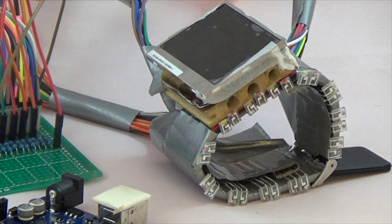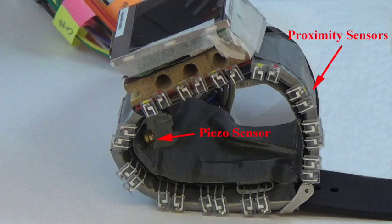We build our prototype smartwatch using a 2-inch display and a plastic watch strap augmented with 12 infrared proximity sensors and a piezo vibration sensor connected to an Arduino Do.